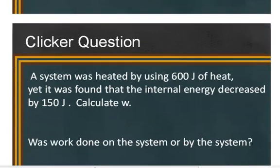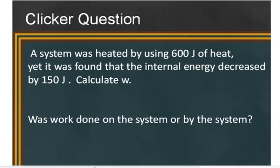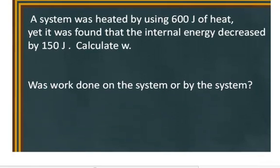Let's take a look at one more example. A system was heated by using 600 joules of heat, yet it was found that the internal energy decreased by 150 joules. Calculate W.